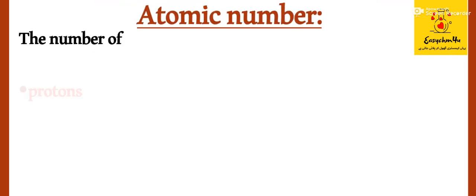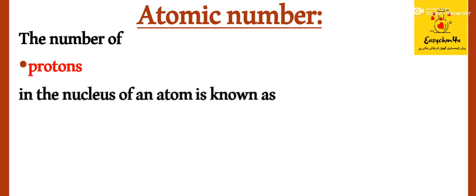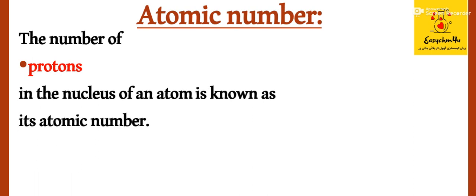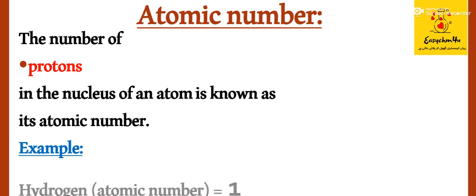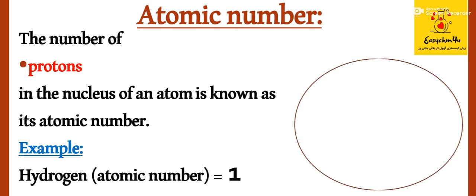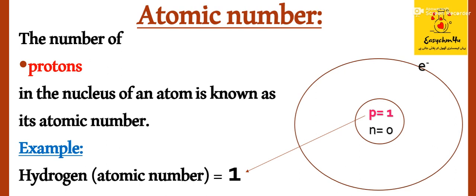What is atomic number? The number of protons in the nucleus of an atom is known as its atomic number. For example, hydrogen has atomic number one. Now let's look at hydrogen's atom structure — it has only one shell, its nucleus has one proton and zero neutrons, and one electron revolves around the nucleus. The number of protons in the nucleus is the atomic number.